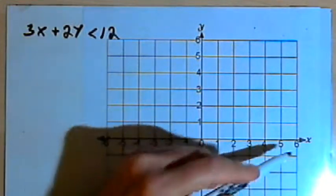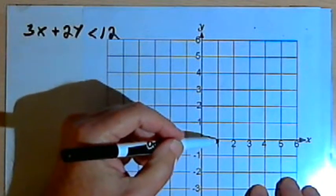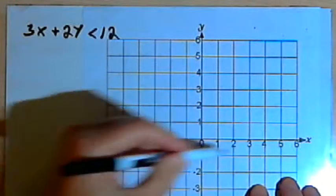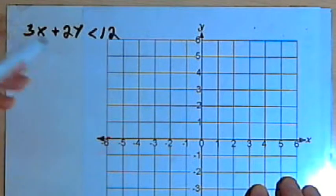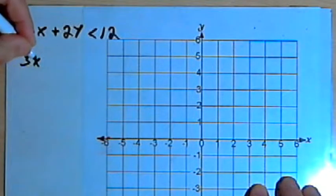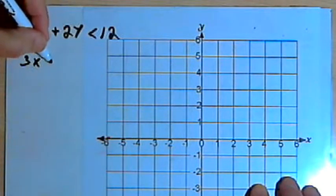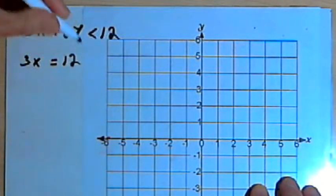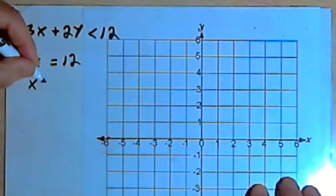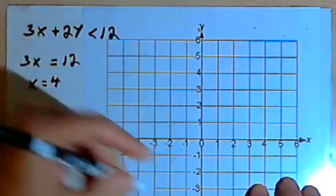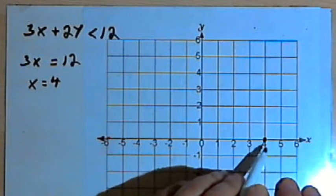We can find the x and y intercepts fairly easily. Every point along the x-axis has a y-value which is zero. So if I'm looking for the x-intercept, I know that the y-value is going to be zero. So I could just think of this equation as 3x plus 2 times zero equals 12. So I'll just make it 3x equals 12. And then if I divide both sides of the equation by 3, I would get x equals 4. That means I'll have an x-intercept at x equals 4.